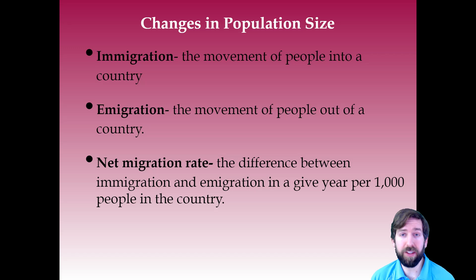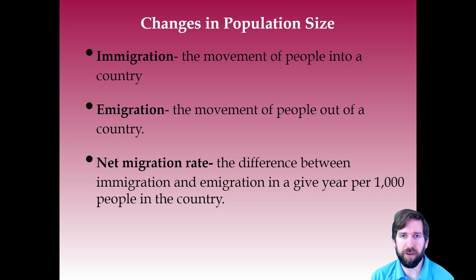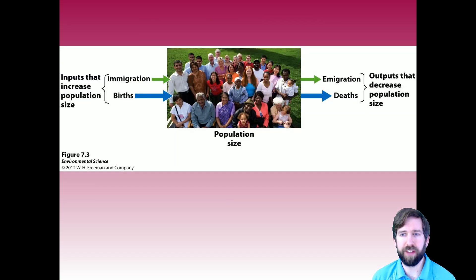Immigration is the movement of people into a country, whereas emigration is movement out of a country. We can talk about the net migration rate — overall, are they taking people in or having people leave? The United States takes in quite a few immigrants, whereas Japan does not take in hardly any. Along with birth rates and death rates, this is what changes your population size. A high immigration rate and high birth rate will increase population size, while high deaths and emigration will decrease it.